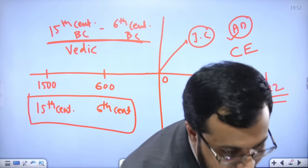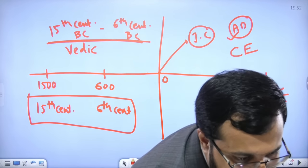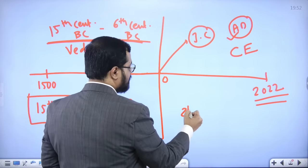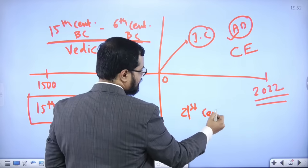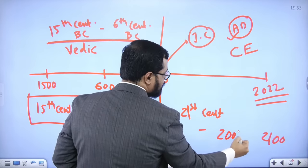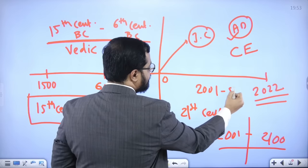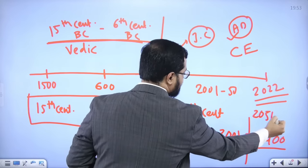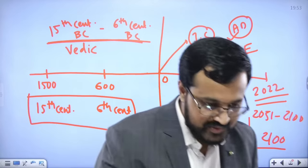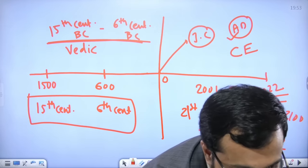For first half and second half of a century: take the 21st century — it goes from 2001 to 2100. The first half is 2001 to 2050 and the second half is 2051 to 2100. You can apply this to any century. The Vedic timeline has been explained. Ancient, medieval, and modern India timelines have been clarified.